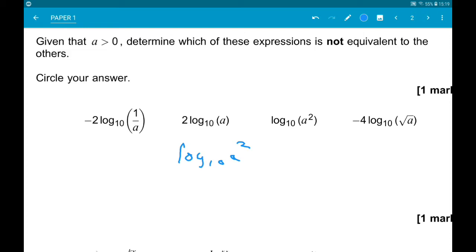Now, if we look at the first one, minus 2 log₁₀ 1 over a, we can write that as log₁₀ 1 over a to the minus 2. Now, 1 over a to the minus 2 flips and gets squared. So, this is log₁₀ a squared.